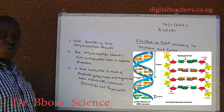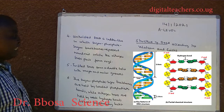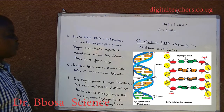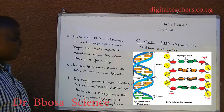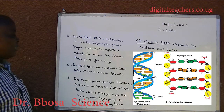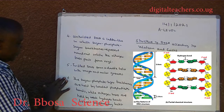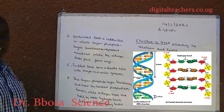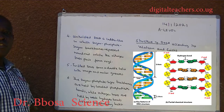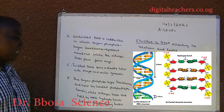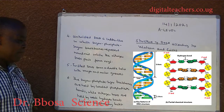guanine (G), and thymine (T). Four, untwisted DNA is rather like a ladder, in which the sugar-phosphate backbones represent the handrails, while nitrogen base pairs form the rungs. Five, twisted DNA forms a double helix with major and minor grooves. Six, the sugar-phosphate backbones are held by covalent phosphodiester bonds, while nitrogen bases are held by weak hydrogen bonds between complementary bases.